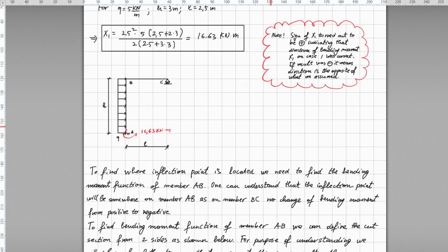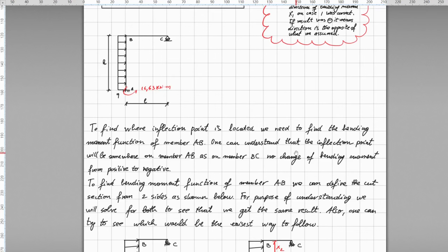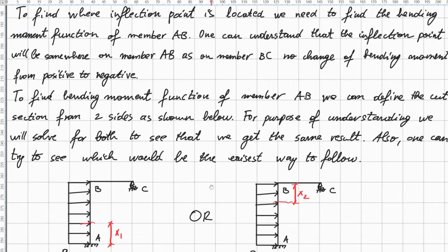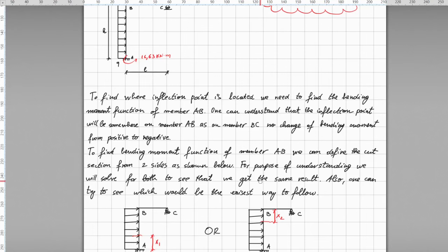To find where the inflection point is located, we need to find the bending moment functions for member AB. Since the support is fixed at A, we expect quadratic functions. To find the point where the bending moment changes sign, we simply set that equation equal to zero and solve. There are two ways to cut the section of member AB to find the bending moment functions, and this is a good example to understand which direction leads to easier hand calculations.